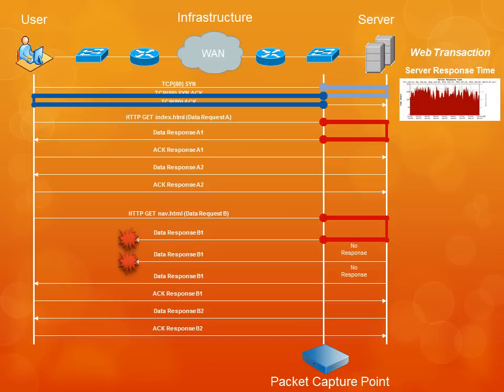Deviations in server response time are caused by four main components: CPU, memory, input-output systems, and backend processing. Any significant latency induced by any of these four components will cause an increase in server response time. For similar transactions, there should be a very low amount of deviation between observations unless there is a problem with one of those four components. Server response time gives us a good indicator of server performance because it is unaffected by performance problems on the network.